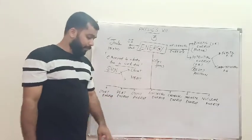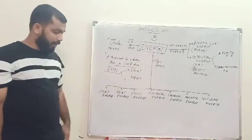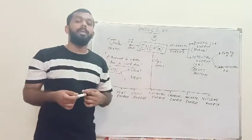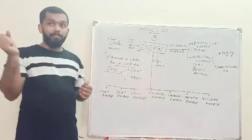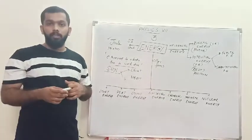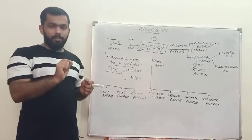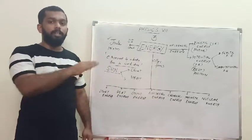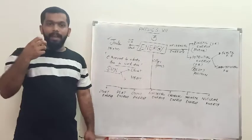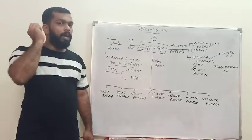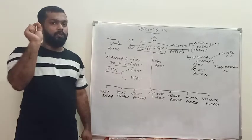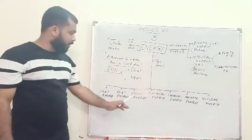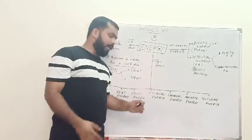Sound energy is also a form of energy. When a drum is beaten, vibrations are produced on the drum, which generate sound. Sound waves travel through air and strike the eardrum, causing it to vibrate. For those vibrations to occur, the sound wave must do some amount of work. Therefore, sound is a form of energy.